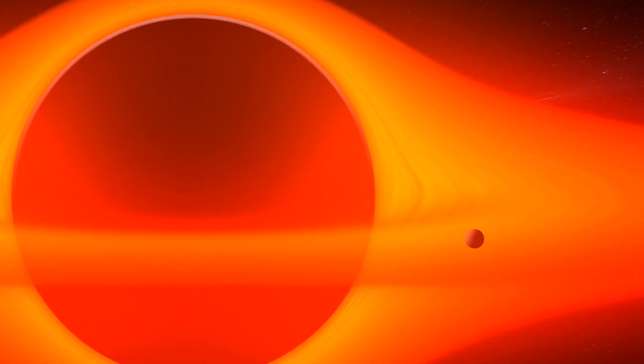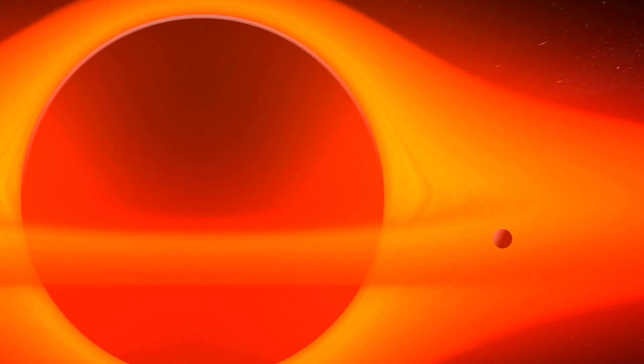Black holes come in different sizes, ranging from just a few miles across to billions of miles across. They are formed when massive stars die and collapse in on themselves, creating a point of infinite density called a singularity.